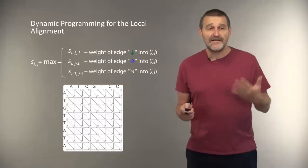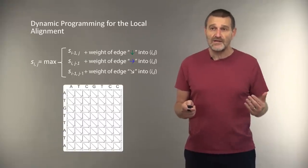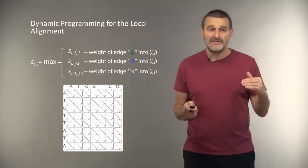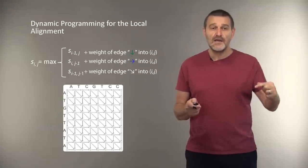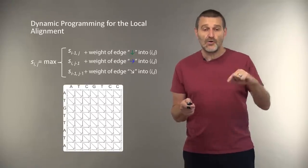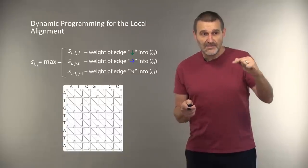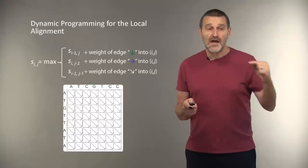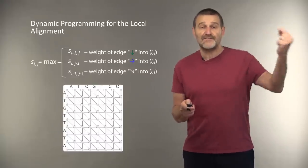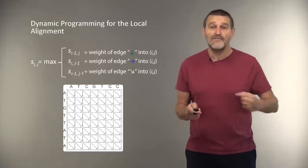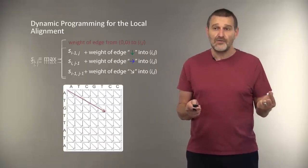how our dynamic programming recurrency changed for the local alignment? Before, we had three possibilities corresponding to three ways to enter a node. By vertical edge, by horizontal edge, and by diagonal edge. Now, there is one more possibility. We can take a free taxi ride to the node. So now there are four possibilities for entering every node.